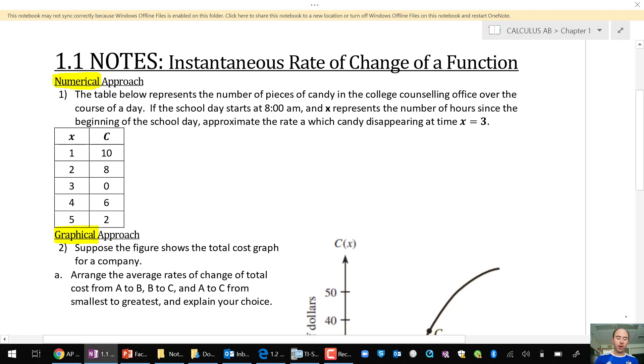So in calculus, when we talk about a numerical approach, all that means is that we're dealing with a data table. In this example, we have a table that represents the number of pieces of candy in the college counseling office over the course of the day. The day starts at 8 o'clock a.m., and x represents the number of hours since that first day of school. Here's the question: what is the rate at which candy is disappearing at time x equals 3?